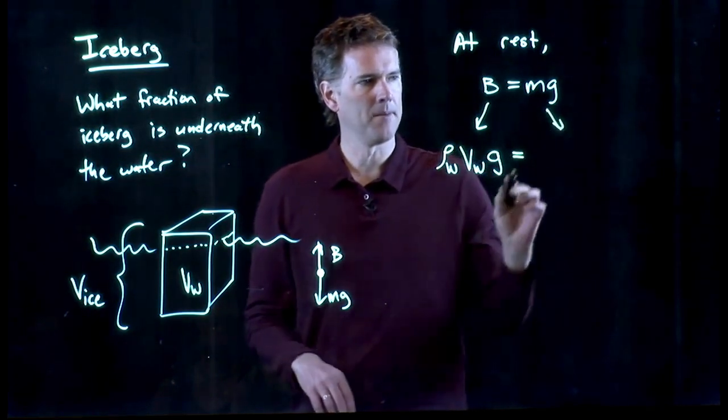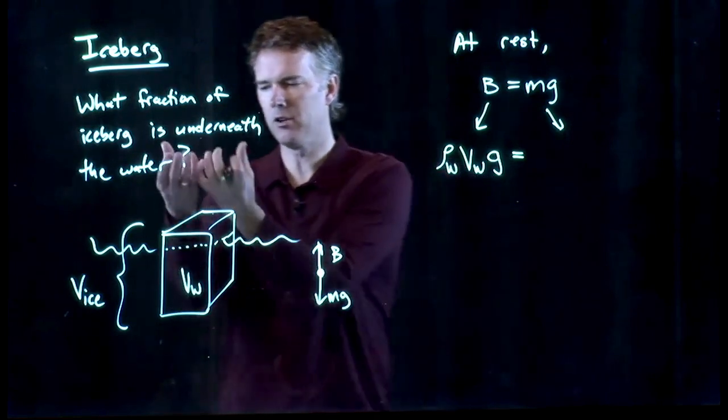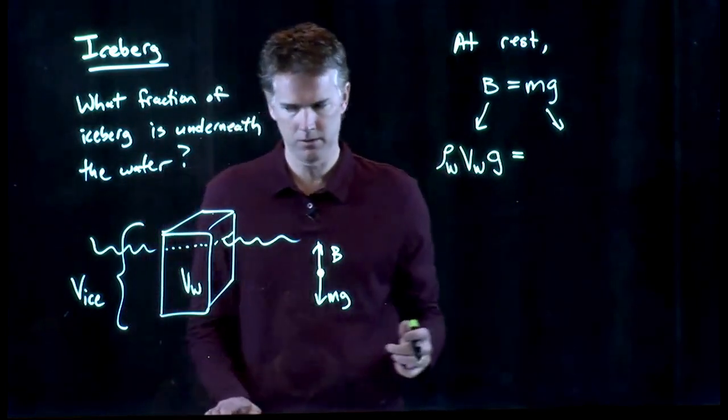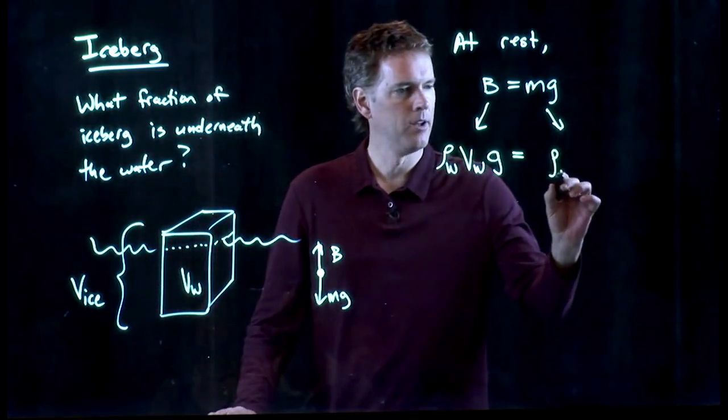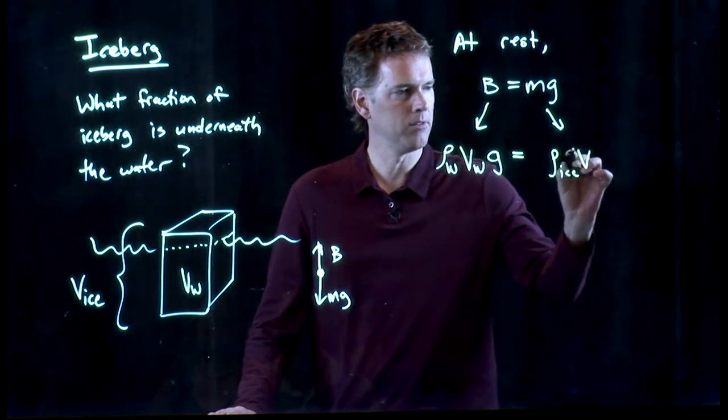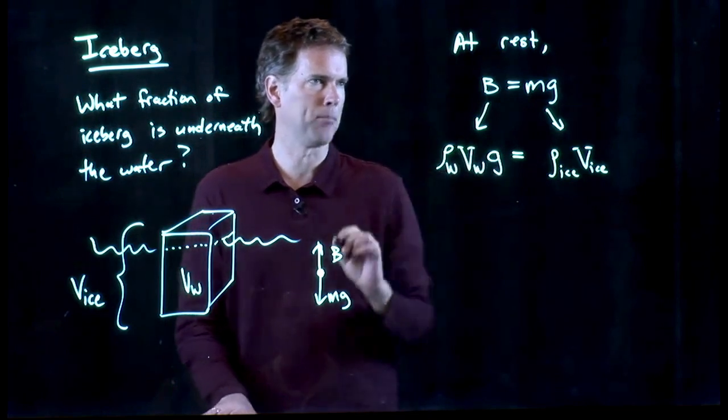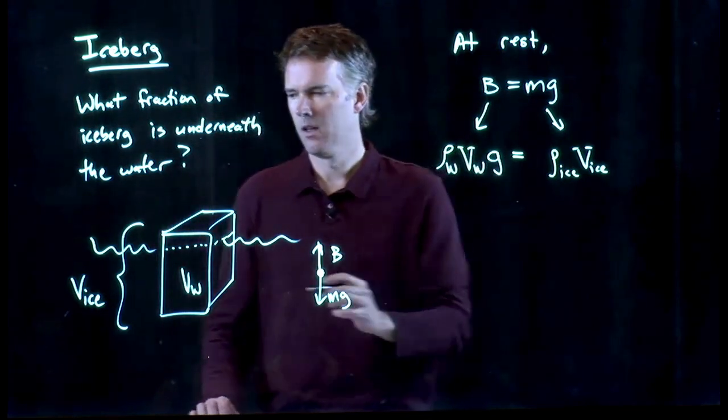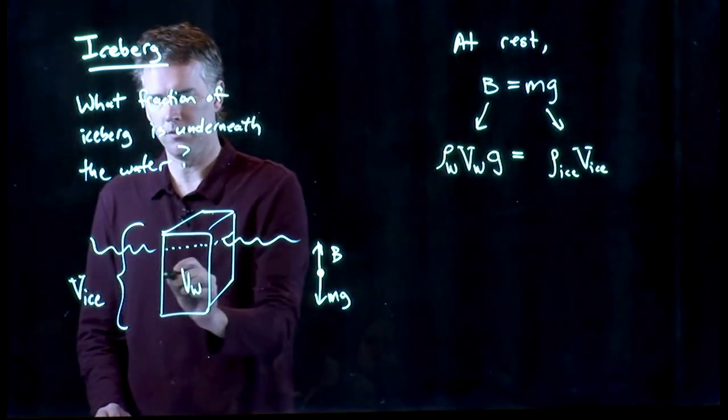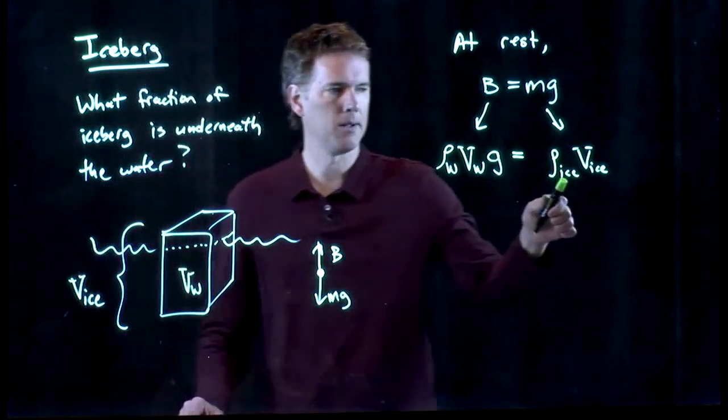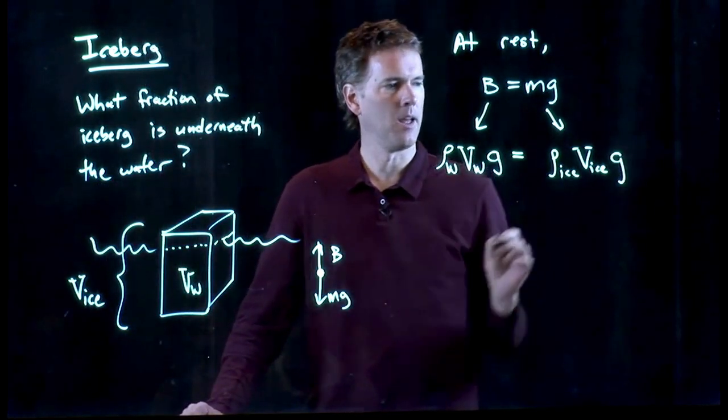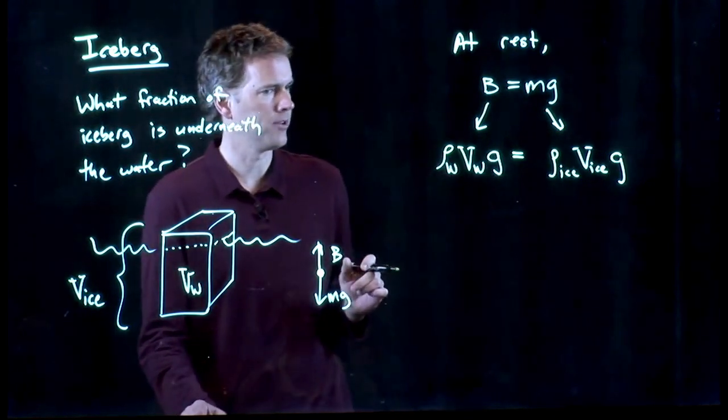What about this guy? This is the total mass of the ice. Gravity is pulling down on all of the ice. And so we have to have the mass of the ice, which is the volume of the ice. We're going to use capital Vs for volume. The volume of the ice times the density of the ice. And then we're multiplying by gravity.